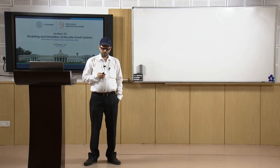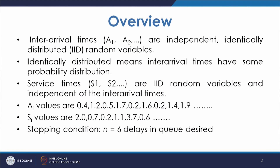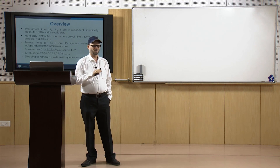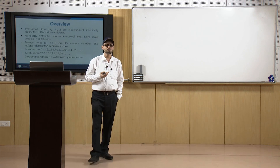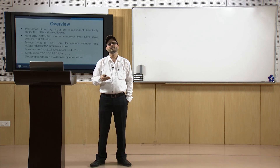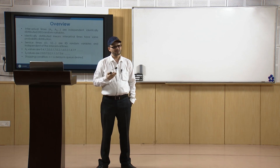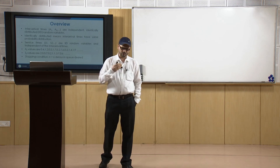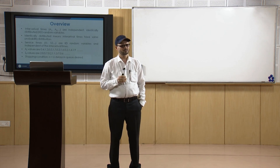We will discuss a problem where the inter-arrival times (AI values) are given, and we will try to find certain measures of performance: how to find them, how to represent them on paper, and how to find the average number of customers in the system or in the queue, average delays, and the percentage utilization of the server. All of that is computed if you have these two data inputs.